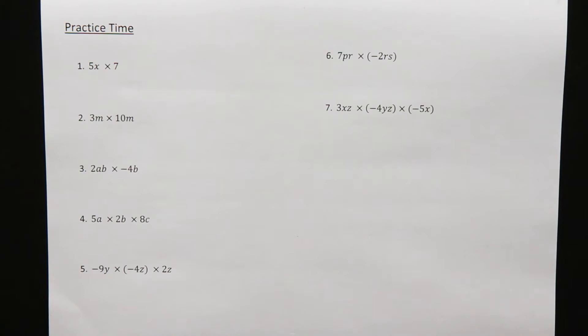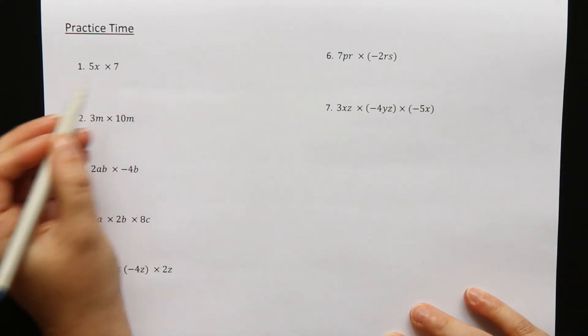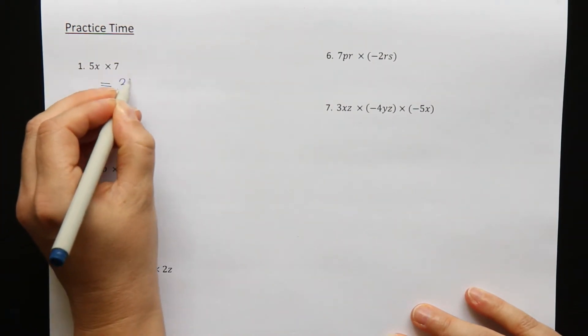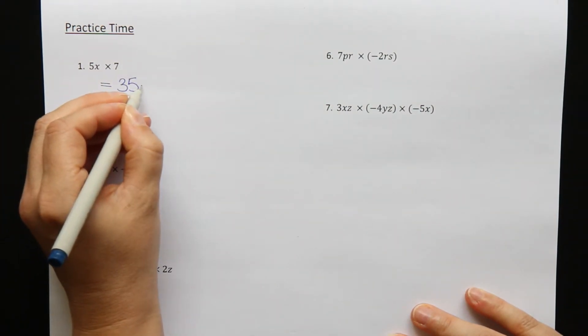Question 1: 5x times 7. Multiply the numbers—5 times 7 is 35. Any letters, the x, sits afterwards.